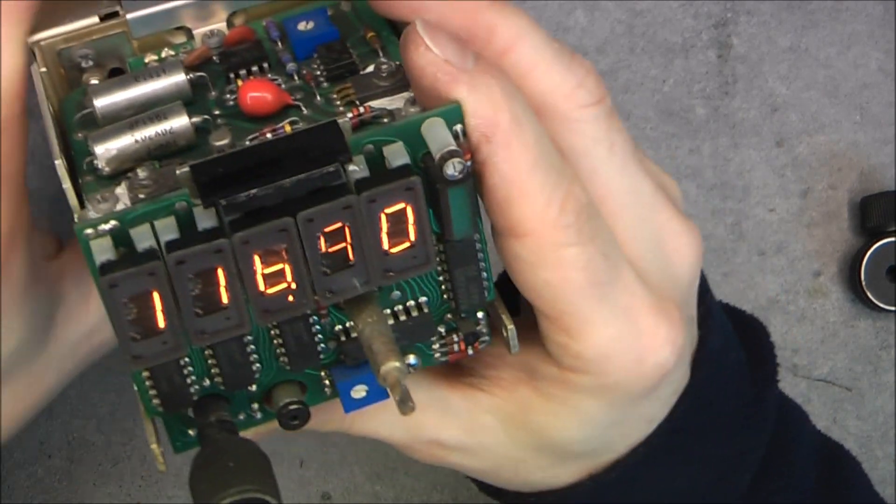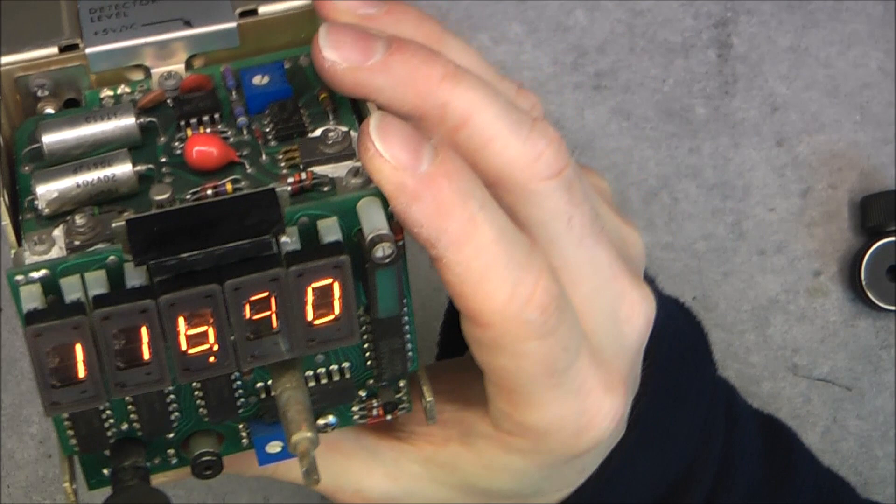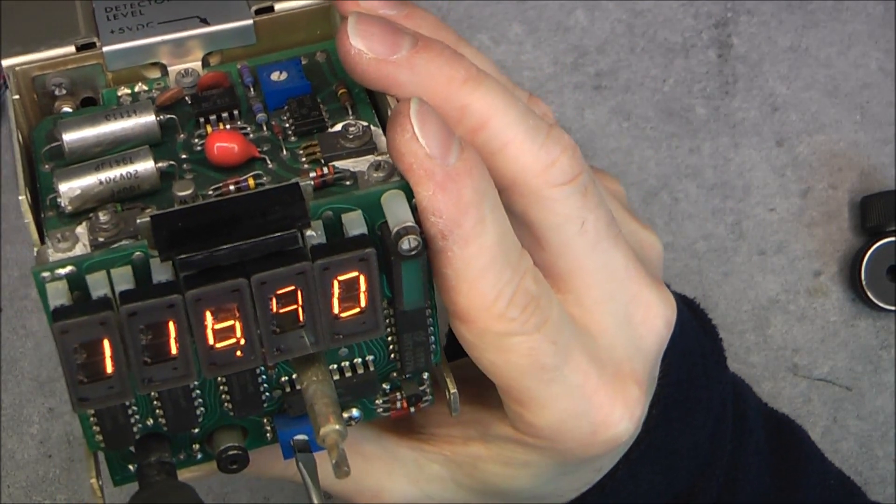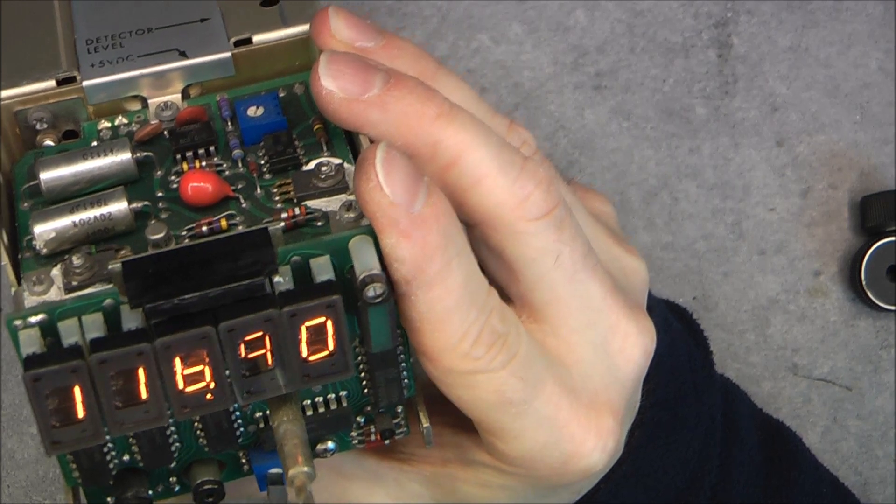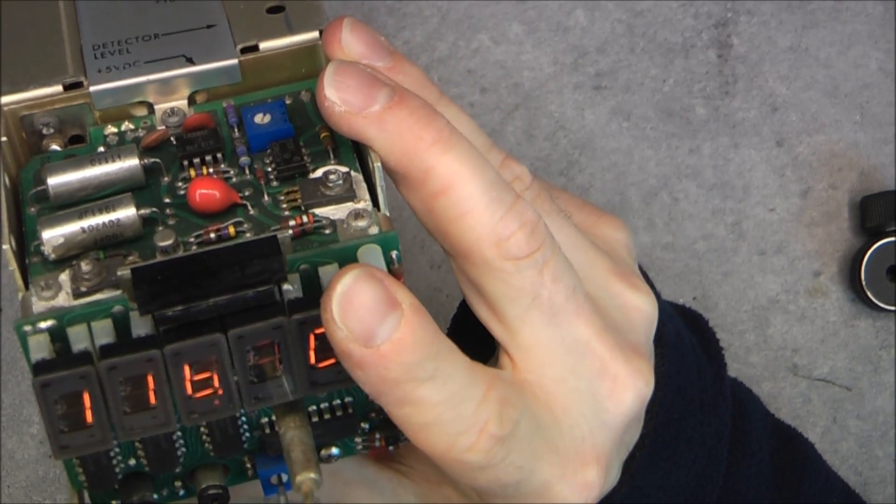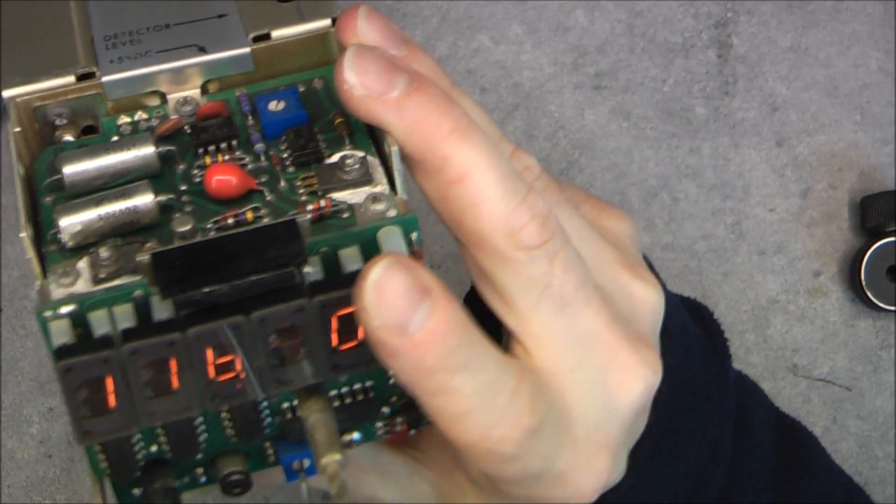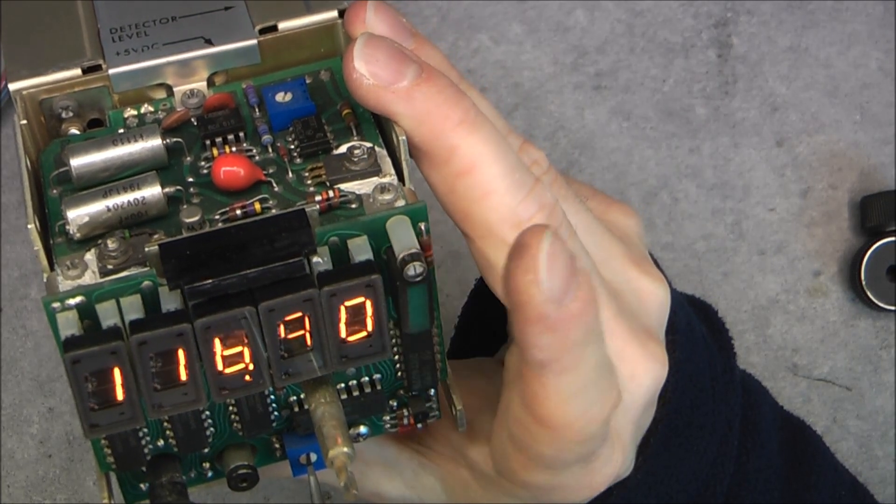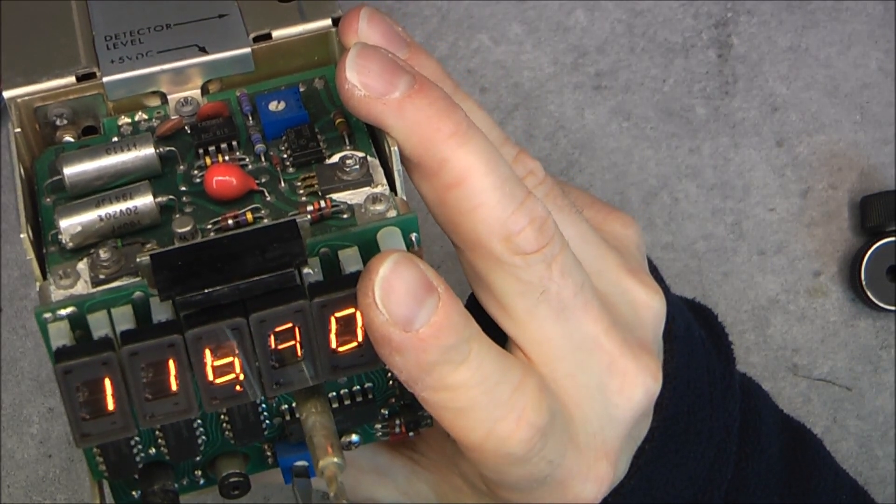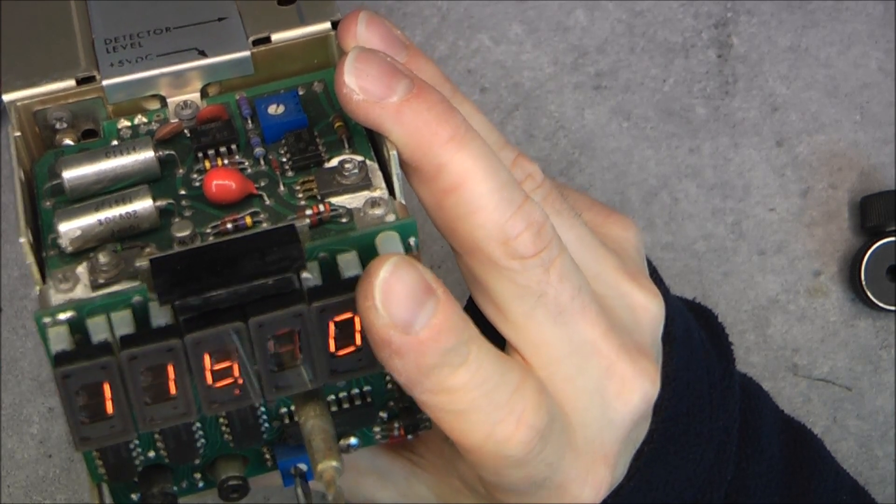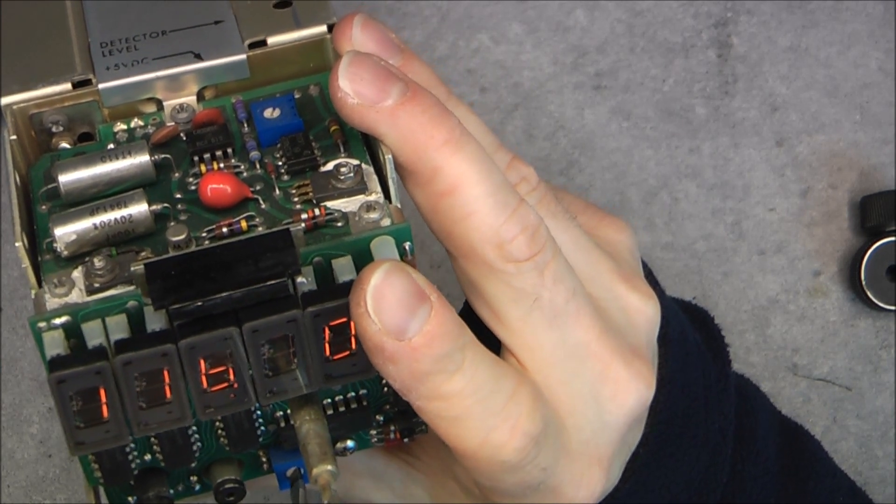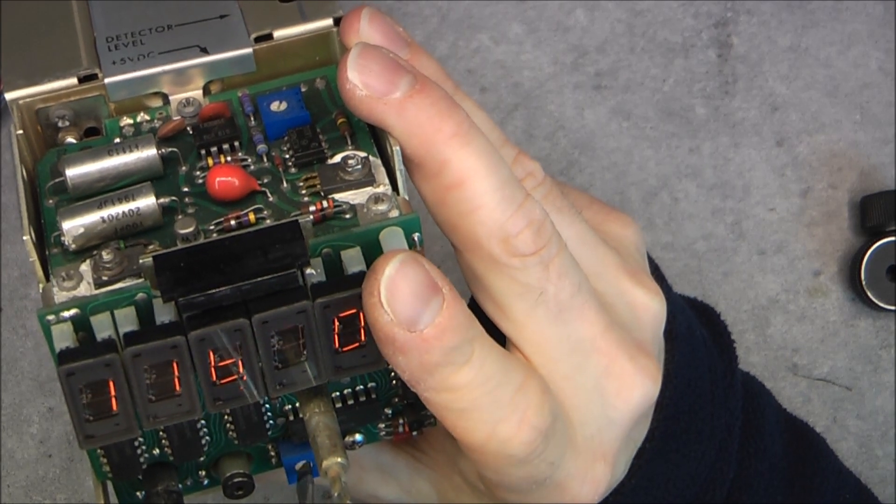So this one is actually very dim. So maybe this is an adjustment for the display. Not sure. But there is here a photo cell that will adjust the brightness of the display. Oh, yes, it is for the display setting. And you can see this one is almost dead.